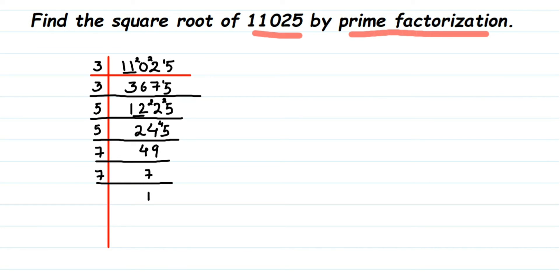Now we're going to write all the prime factors we got here. So 11,025 can be written as all these prime factors what we got: 3 × 3 × 5 × 5 × 7 × 7.